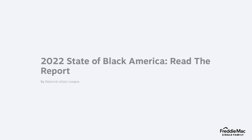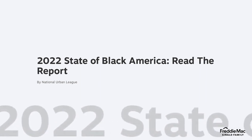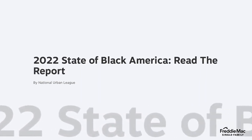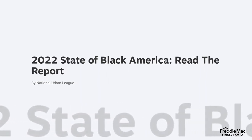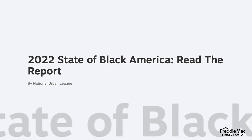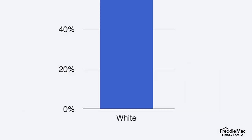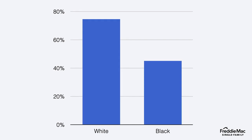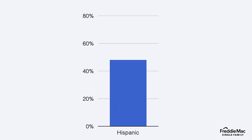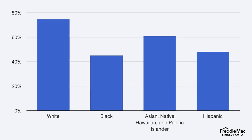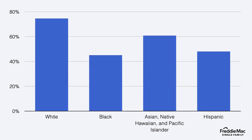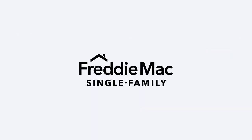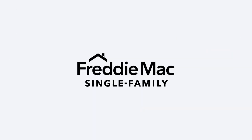According to the National Urban League's 2022 annual report on the state of Black America, in the second quarter of 2022, the homeownership rate for white households was 75% compared to 45% for Black households, 48% for Hispanic households, and 57% for non-Hispanic households of any other race. Together, we want to provide you with the tools to work on closing the gap.